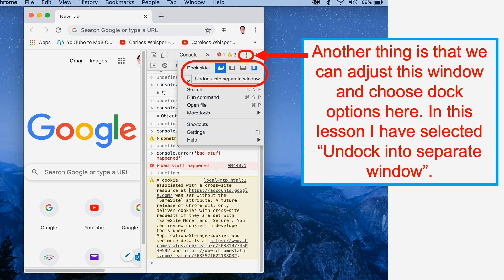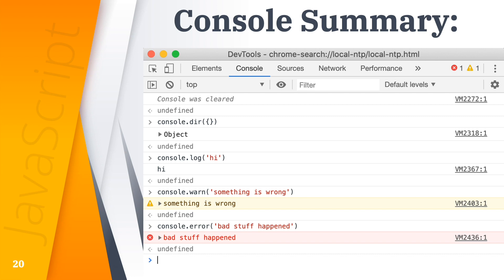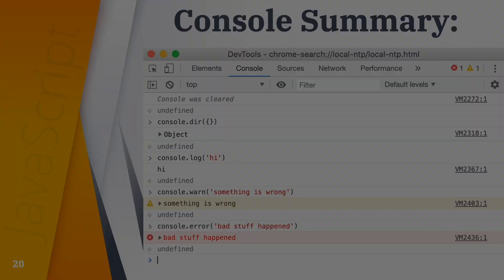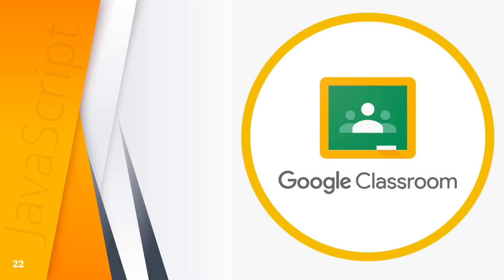Here's the console command summary: we had console.dir(), console.log(), console.warn(), and console.error(). As we move through the lessons in this class, we'll see a lot more in the console. For today's classwork, please answer module 1 found in Google Classroom. I hope that you learned something about some basic commands in the console.